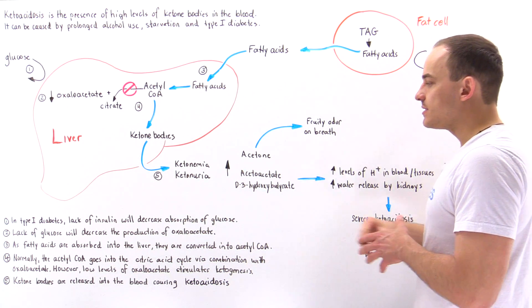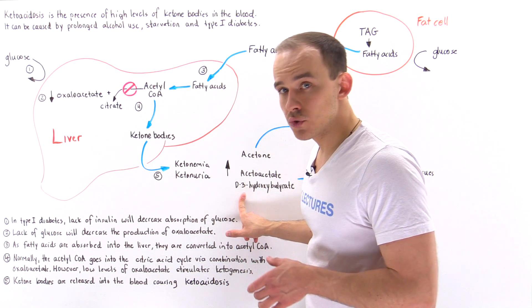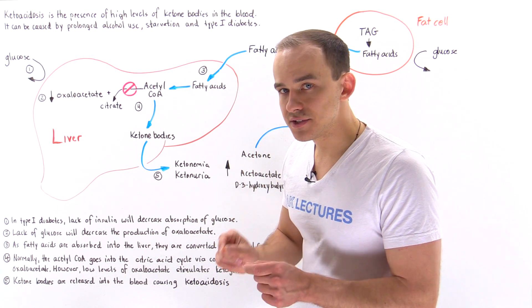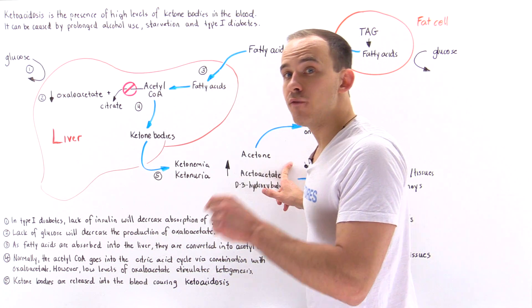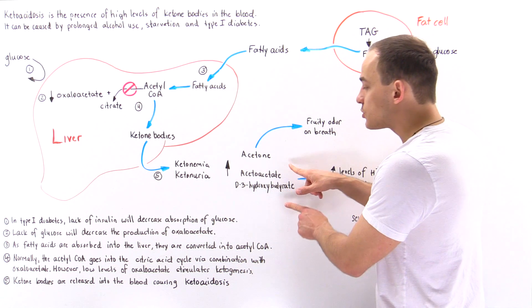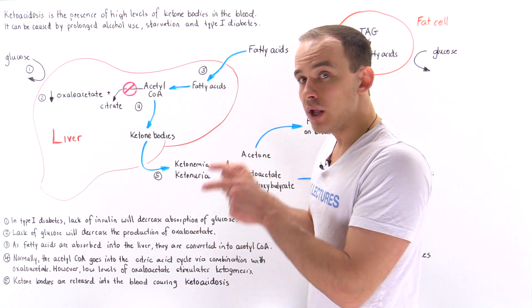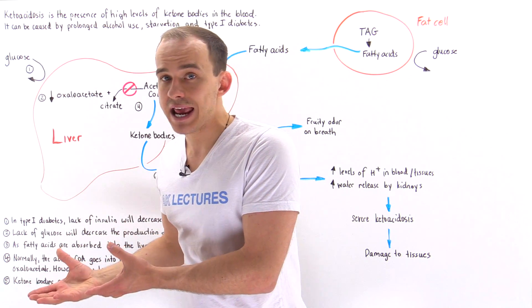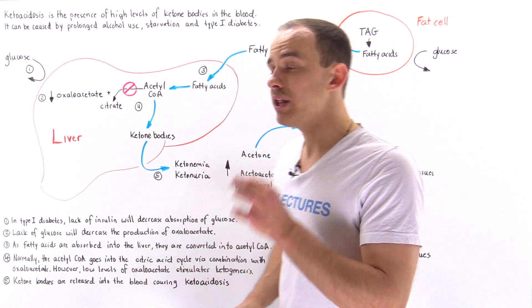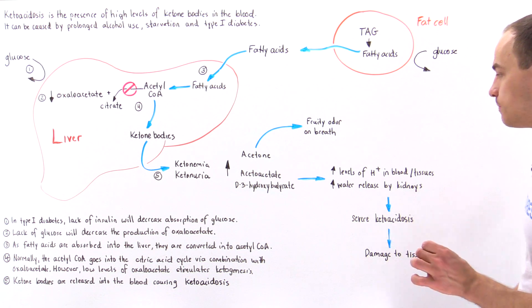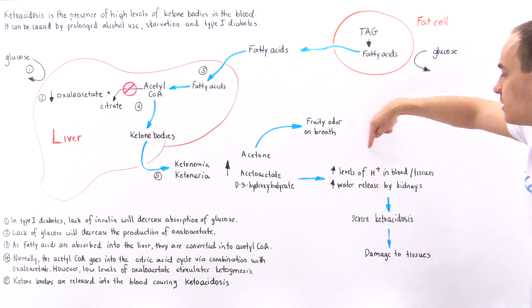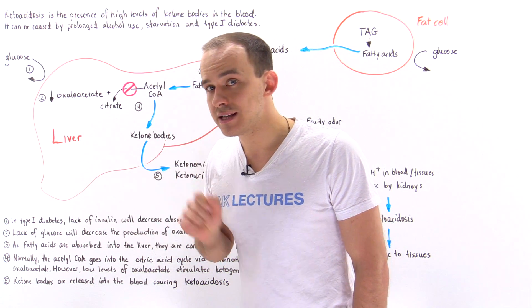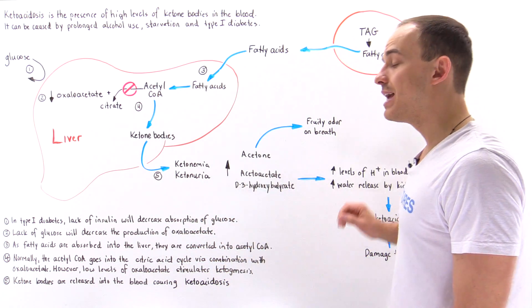What about the acetoacetate and D3-hydroxybutyrate? These are actually acids, and the pKa value of these two acids is around 4. What that means is once these two molecules enter the bloodstream, they're going to dissociate, releasing those H+ ions, and that will increase the acidity of the blood. So we see that these two ketone bodies will increase the levels of H+ ions in the blood, and that will in turn increase the H+ ion concentration in the tissue.